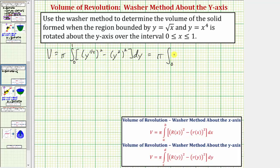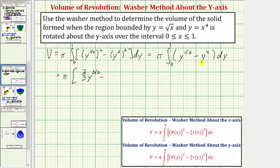We have pi times the integral from zero to one. Y to the one-fourth squared is y to the two-fourths, or y to the one-half. Minus y squared squared is y to the fourth. The antiderivative of y to the one-half is y to the three-halves divided by three-halves, or two-thirds y to the three-halves, and minus the antiderivative of y to the fourth is y to the fifth divided by five, or minus one-fifth y to the fifth.